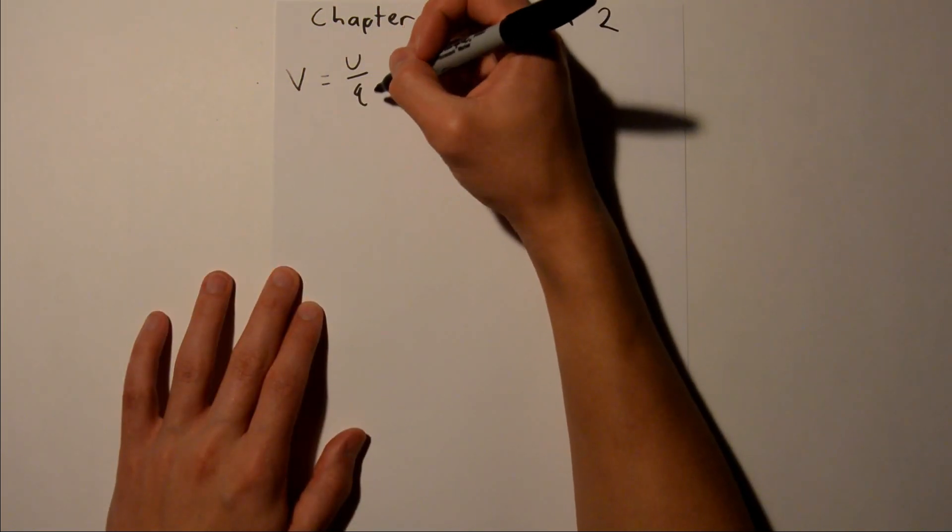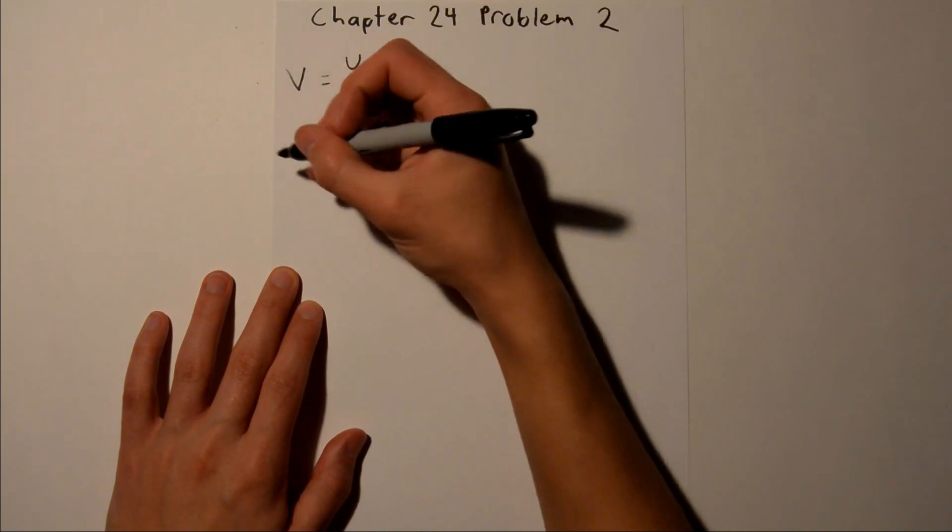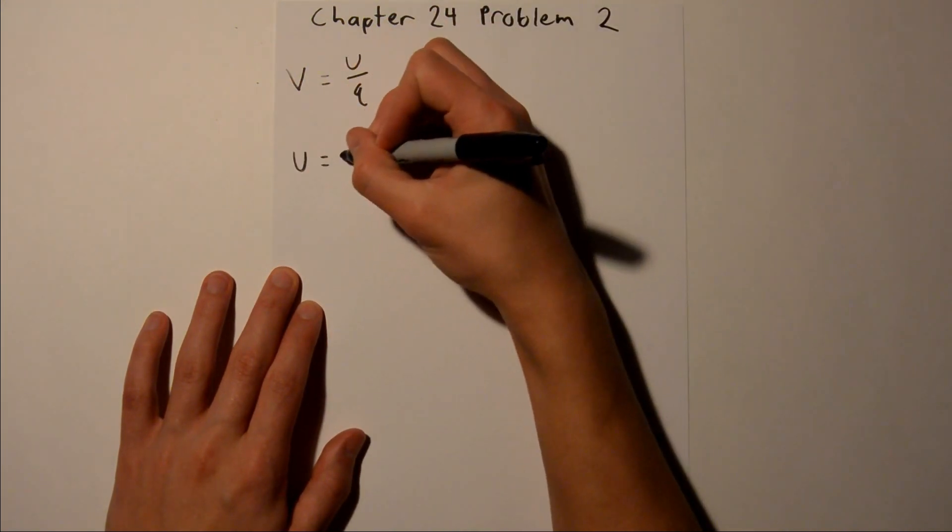And we're solving for U, so we need to multiply both sides by Q, so U equals QV.